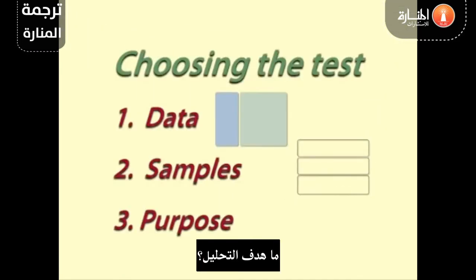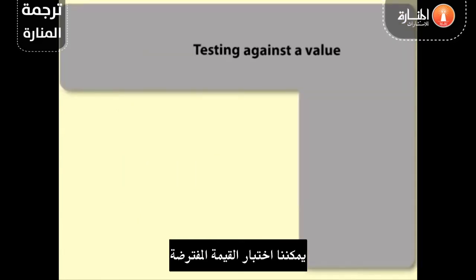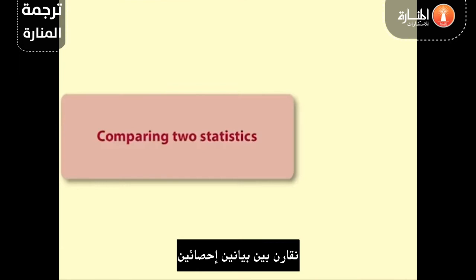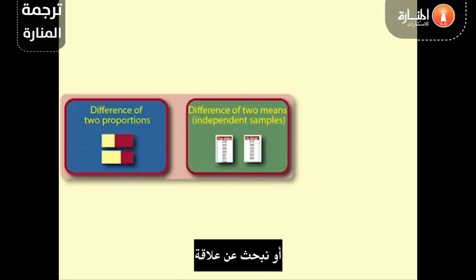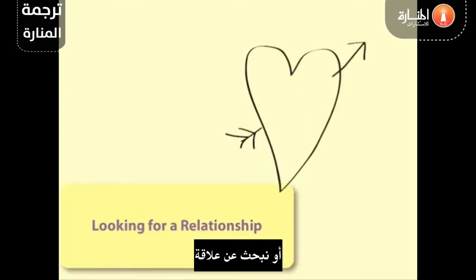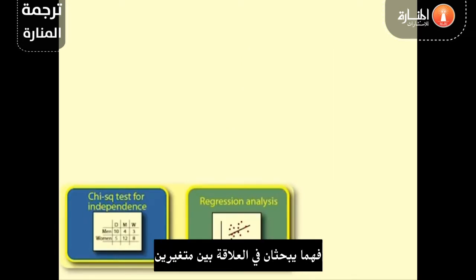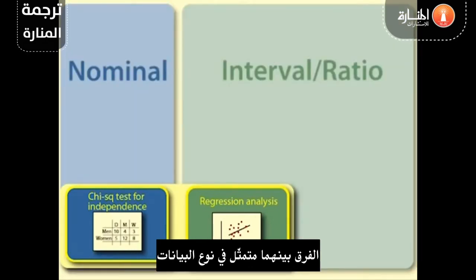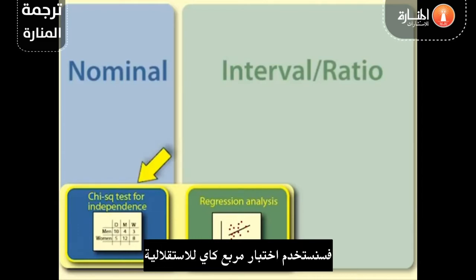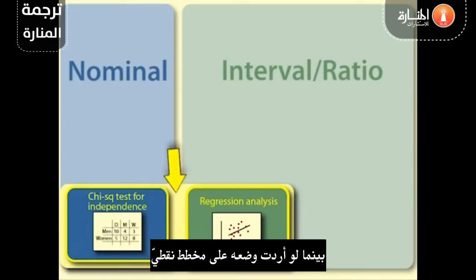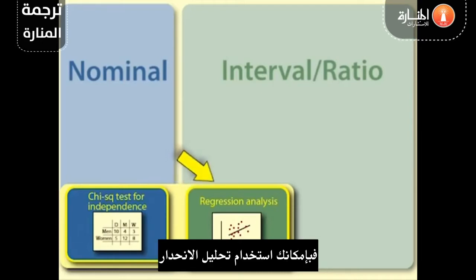Finally, we ask: what is the purpose of the analysis? We can be testing against a hypothesized value, comparing two statistics, or looking for a relationship. Chi-squared test for independence and regression are similar in that they are looking at the relationship between two variables. The difference between them is in the kind of data. If you would summarize the data in a table, we would use a chi-squared test for independence, whereas if you would put it on a scatter plot, you would use regression analysis.